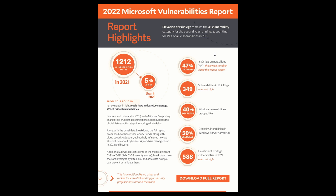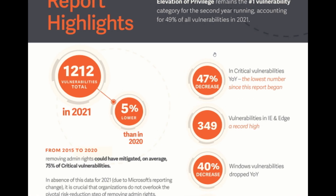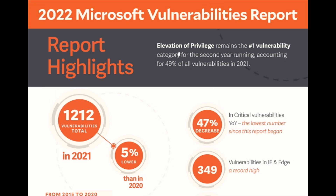According to this report by Beyond Trust, elevation of privilege remains the number one vulnerability category for the second year running, accounting for 49% of all vulnerabilities in 2021. In case you are unaware, a brief summary from Microsoft Docs: elevation of privilege results from giving an attacker authorization permissions beyond those initially granted — for example, when an attacker with read-only permissions elevates to include read and write.